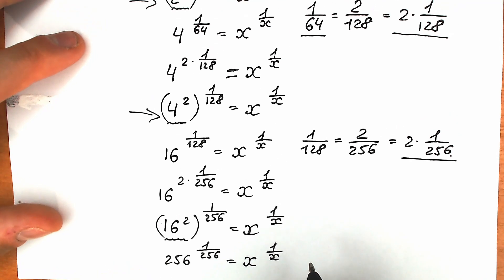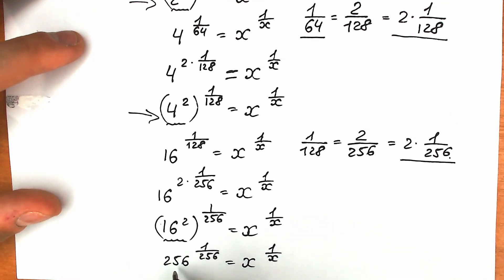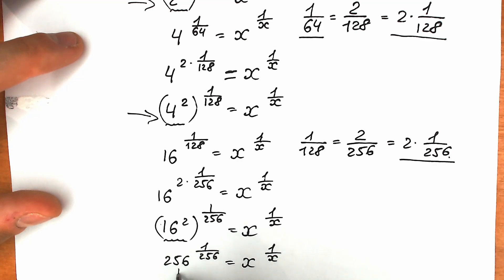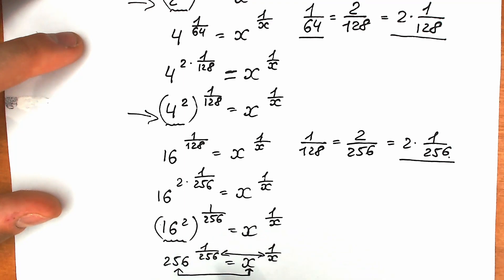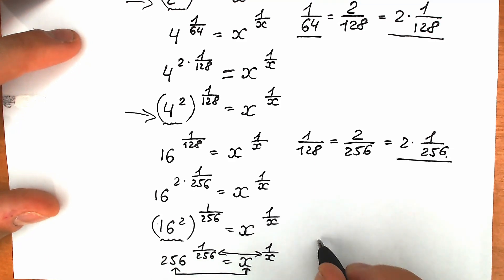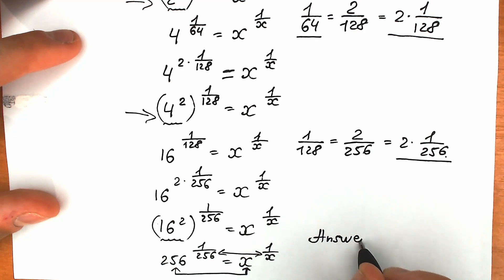Now if you look closely, both sides have the same form: the base appears in both the base and exponent positions. We have 256 to the power 1 over 256, and x to the power 1 over x — it looks like a to the power 1 over a equal to x to the power 1 over x. The one and only case where this equation has a root is when x equals 256, because base must equal base and exponent must equal exponent. So x equals 256.